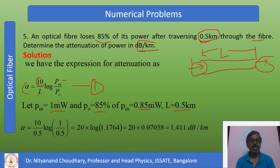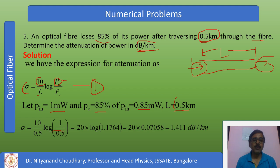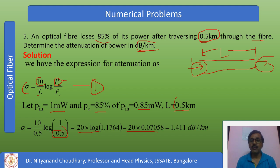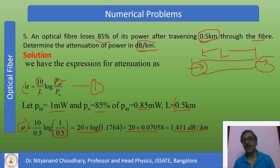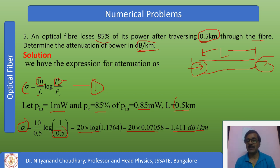Substituting the values and taking log(1 / 0.85), we get the attenuation coefficient alpha = 1.411 decibels per kilometer. So per kilometer, the fiber loses 1.411 dB. This is not a large loss, indicating it is a good type of fiber — possibly a single-mode fiber.